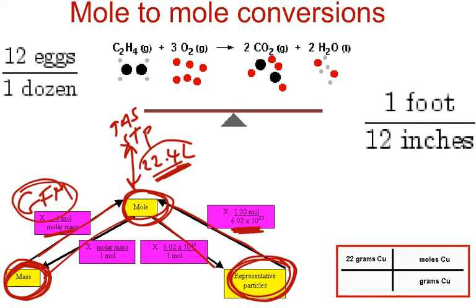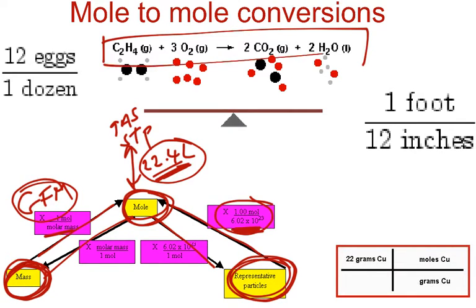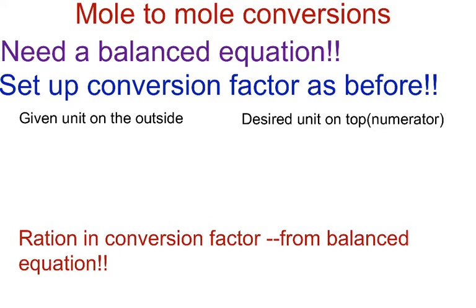So once again, GFM, 22.4 liters, and Avogadro's number help us go back and forth with the mole to these units. Now, in mole-to-mole conversions, it's absolutely essential that we have a balanced equation. Because we will use that to change moles of one substance into moles of another substance. So we must use a balanced equation, and our conversion factors, as always, should be equivalent.